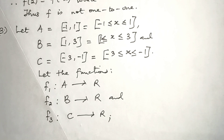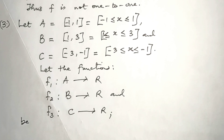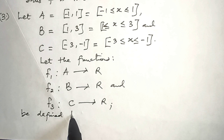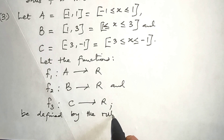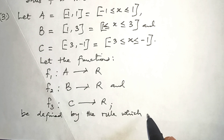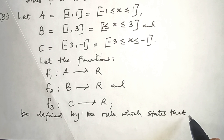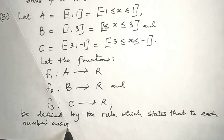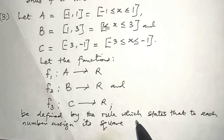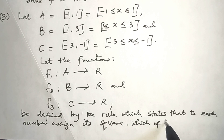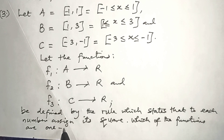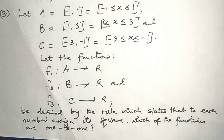Let these functions be defined by the rule: to each number, assign its square. So f1(x) = x², f2(x) = x², and f3(x) = x². The question is: which of these functions are one-to-one?